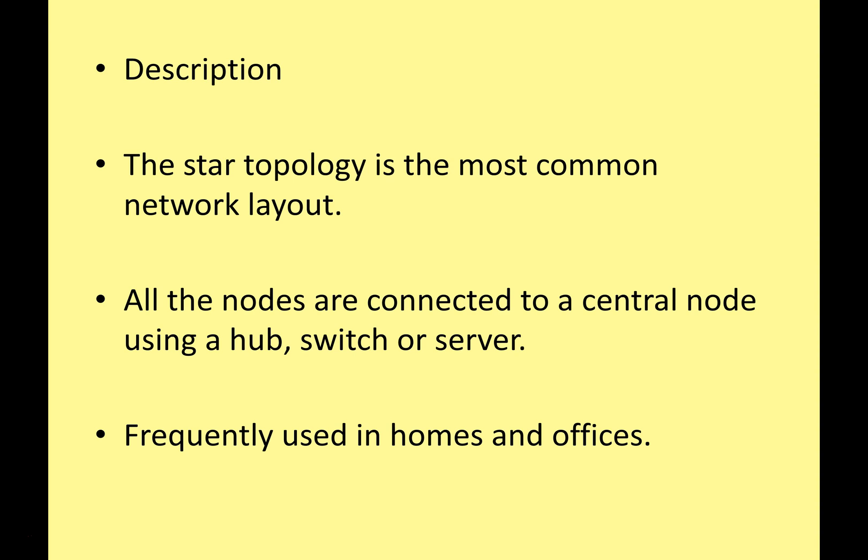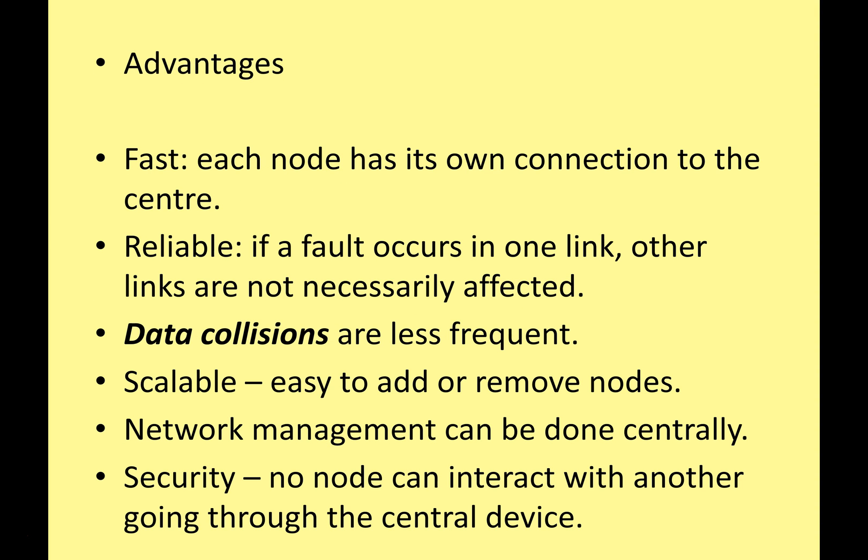It's a common network topology — everything is connected to the central point, and it's used very frequently around the world. Because everything is connected through to the central point, it has a lot of advantages over some of the older network topologies, such as a ring topology or a bus topology. Each node has its own connection to the center, so it's very fast. If there is a fault in one of the links or one of the nodes, it's not going to affect the rest of the network, so it's very reliable. Because each node has its own dedicated path to the central hub or switch, you're not going to get a lot of data collisions.